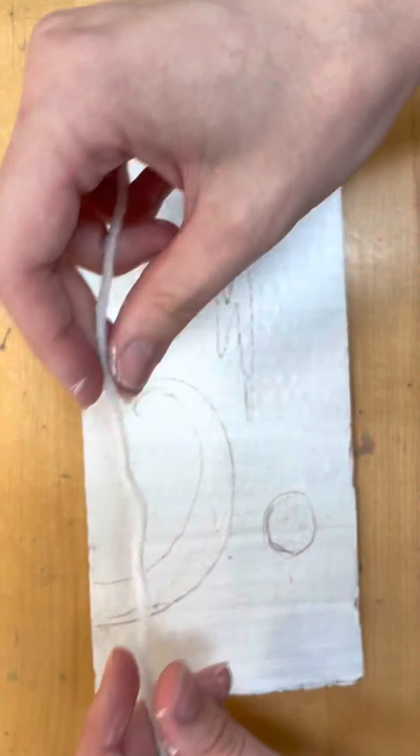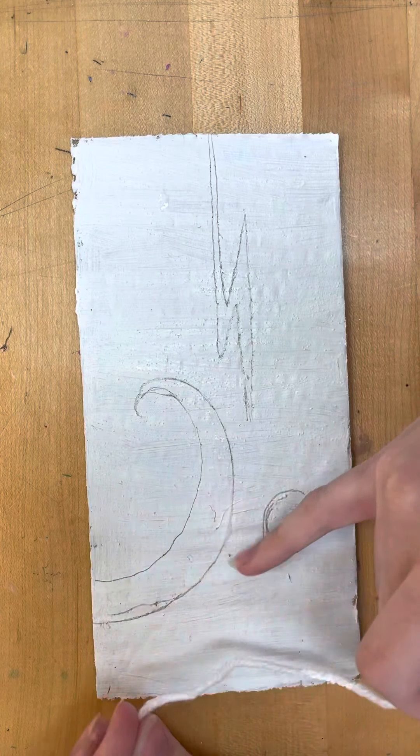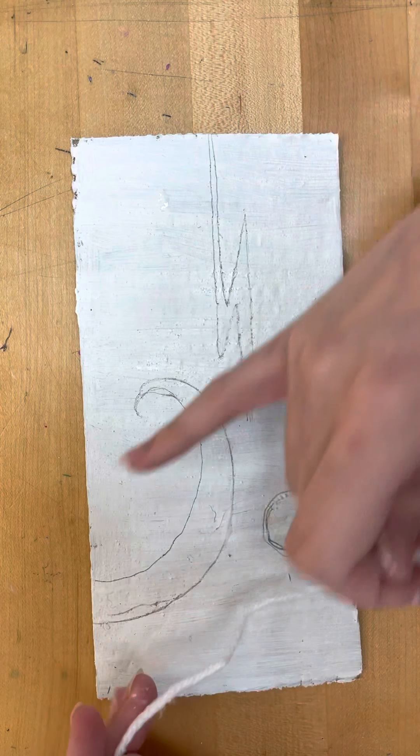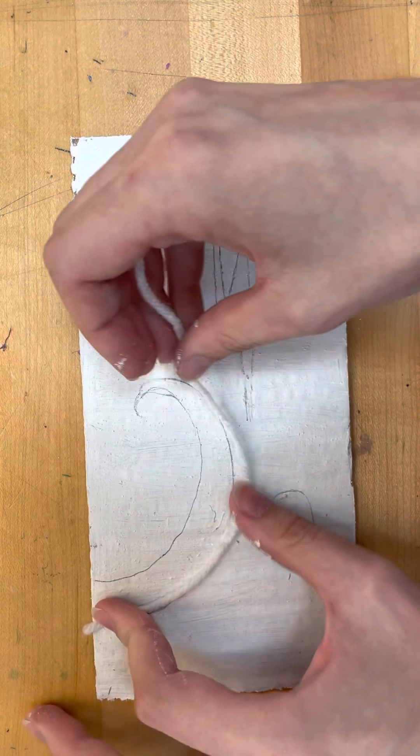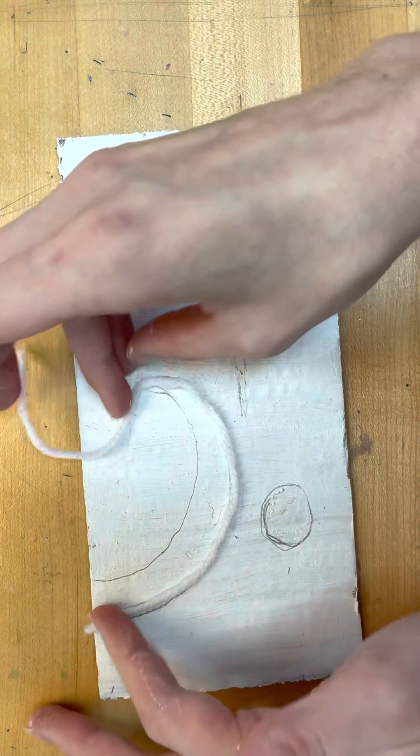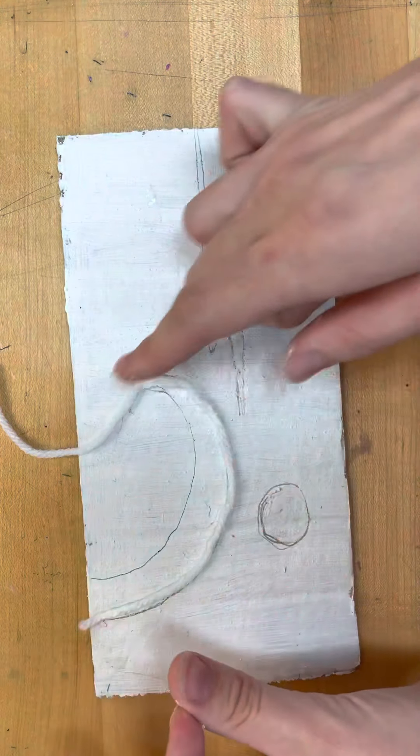So right here I have my contour line that outlines this little loop. Maybe if I wanted to, I could use my string and outline that contour, and then that's going to create some visual interest.